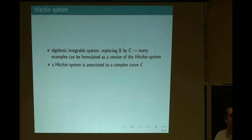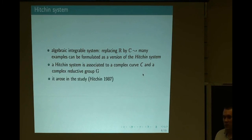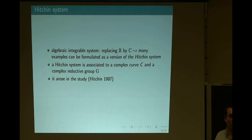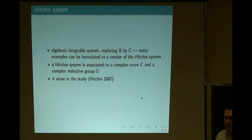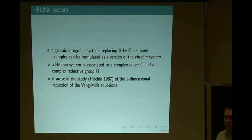These Hitchin systems are associated to a complex curve C and a complex reductive group G. For us we will take three groups: GL_N, SL_N, and PGL_N. The Hitchin system arose in the study of the Yang-Mills equations. Hitchin was studying four-dimensional Yang-Mills equations reduced to two dimensions and found the equations reduce to the so-called self-duality equations; the total space of solutions of the self-duality equations on the Riemann surface turns out to be the total space of an integrable system.